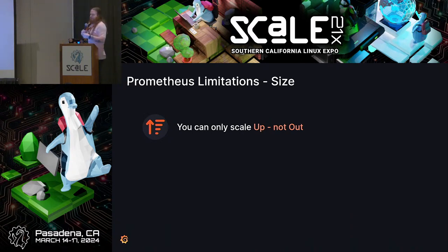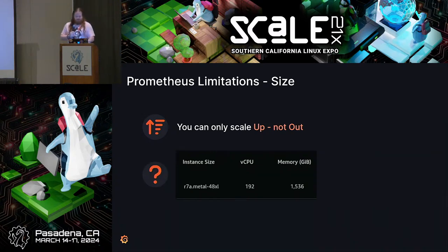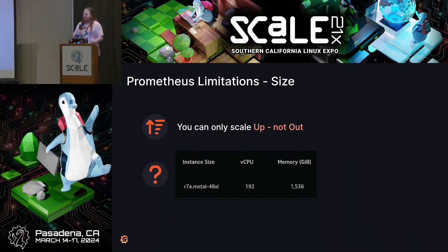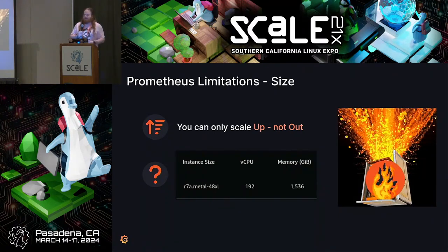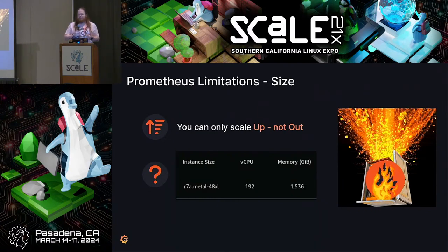You might be in a position where your metric needs are growing, and you keep adding CPU and memory until this is too big for one machine. Maybe you're running in AWS doing bigger and bigger instances — all the way up to something like the R7A.Metal48XL with 192 CPUs and over 1.5 terabytes of RAM. And that's still not enough. I have spoken to a customer who literally was at the largest AWS instance they could get, with millions of series inside it, and it was still falling over. Eventually you run out of headroom — there's only so far you can go.